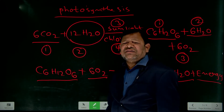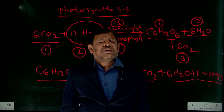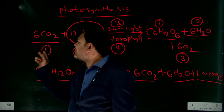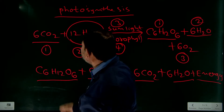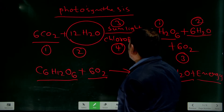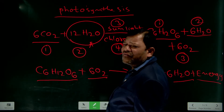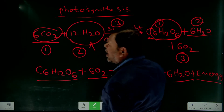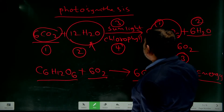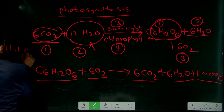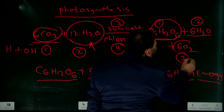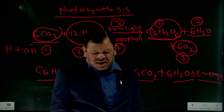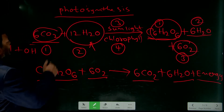Photosynthesis is an important life process — without it, there is no food for us. In photosynthesis, carbon dioxide, water, sunlight, and chlorophyll are required. Water molecules split into H+ and OH- ions and the oxygen released in photosynthesis comes from water molecules. Without photosynthesis, there is no oxygen gas.